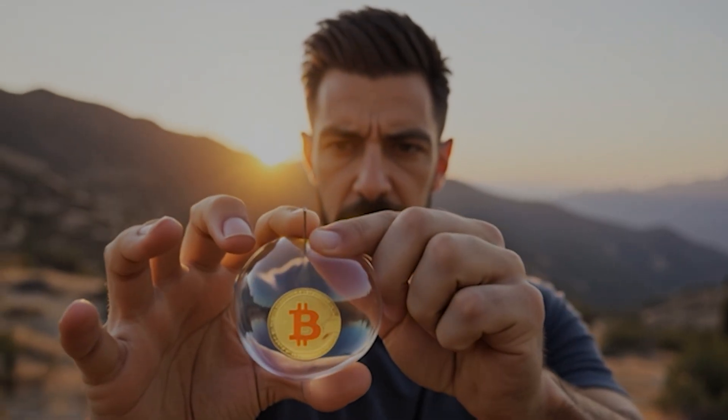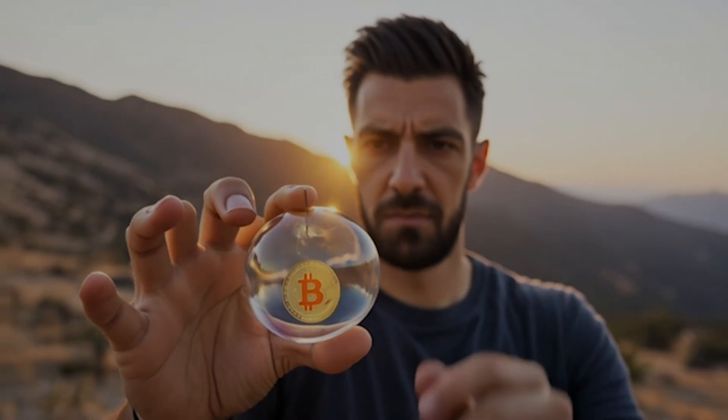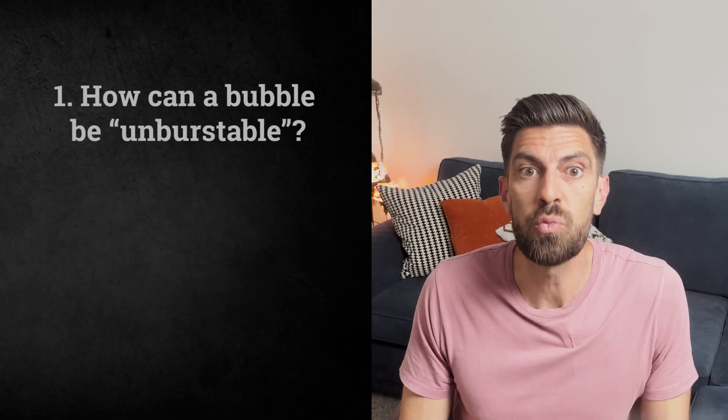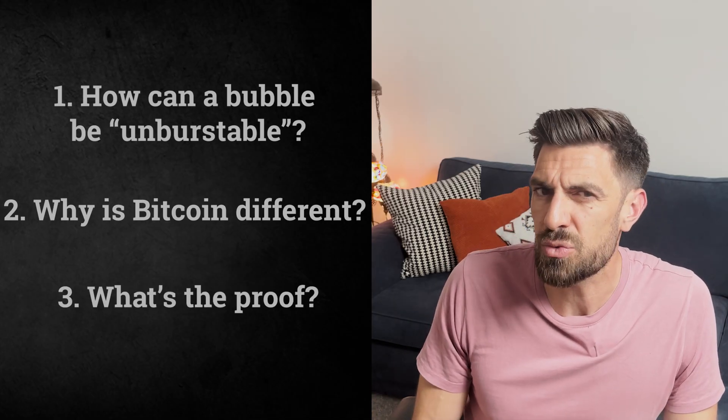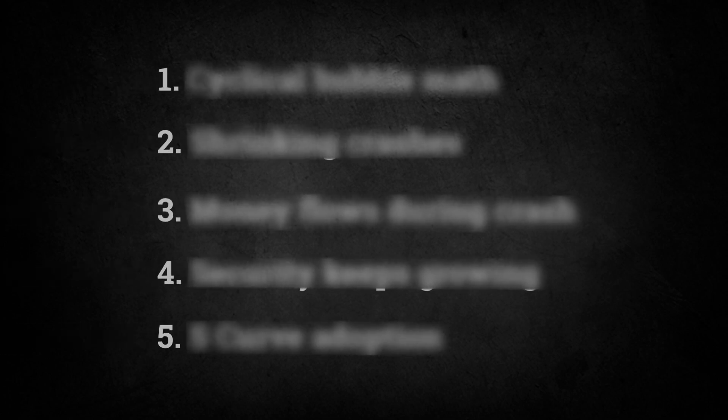Everyone keeps saying Bitcoin is a bubble about to burst, but what if this bubble is actually unburstable? You're probably wondering three things: how can any bubble be unburstable, what makes Bitcoin different from every other bubble in history, and is there actual mathematical proof? This research cost me months of my life and drove my wife to bar me because I was becoming obsessed with proving Bitcoin was a scam. Instead, I was humbled by what could be the biggest financial revolution of our lifetime. I discovered five pieces of mathematical evidence that don't just prove Bitcoin isn't a bubble — they prove it's something that's never existed before in financial history.